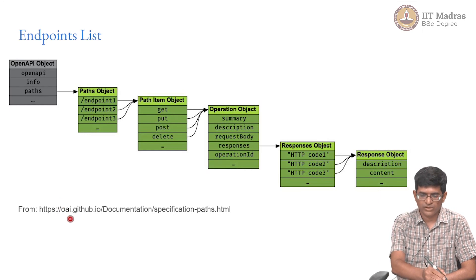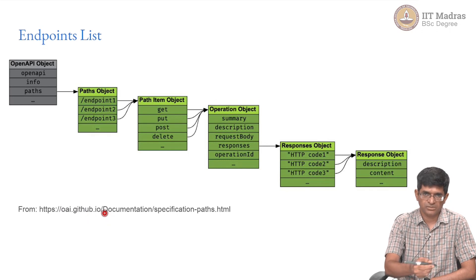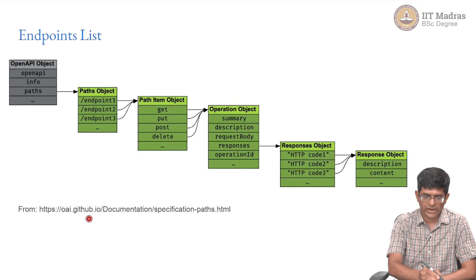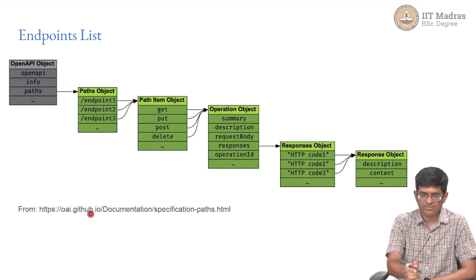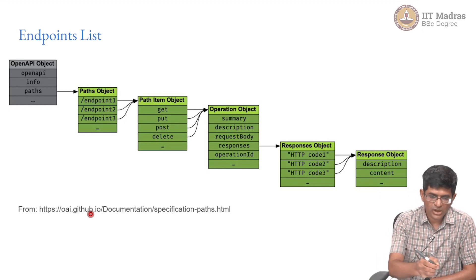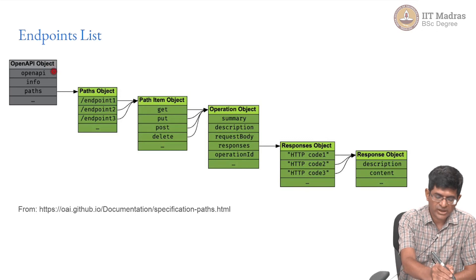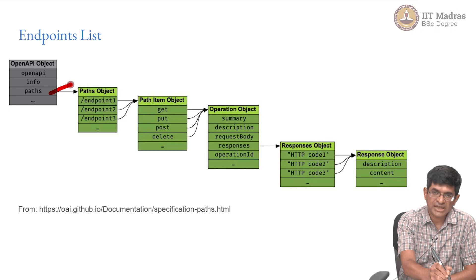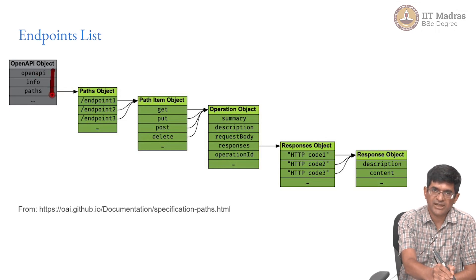Most of what I am going to show here are examples from the OAI — the OpenAPI documentation — available at OAI.github.io, and these pictures as well as some of the succeeding things are all from there. So what does an OpenAPI object itself contain? We already had 'openapi', 'info', and 'paths' — these are sort of the three main requirements of an OpenAPI object.